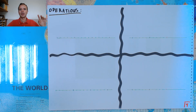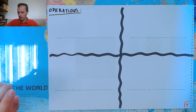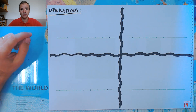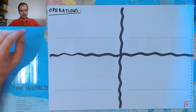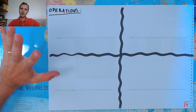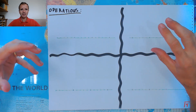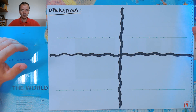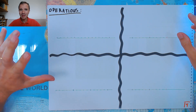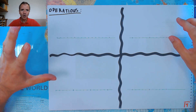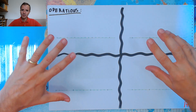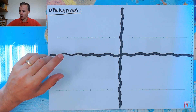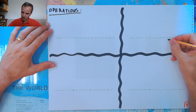Now let's go to page 4, and we're going to see some operations. We're going to follow the same idea that we had on the previous page, but now we're going to use the number line. This is the only difference.